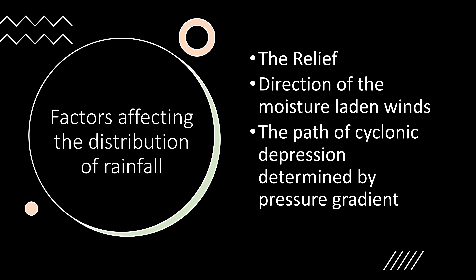There are three major factors which help in the distribution of rainfall. They are the relief, that is the topography of the land; the direction of the moisture laden winds, that is which way the moisture laden winds are coming from; and the path of cyclonic depression, determined by the pressure gradient. Pressure gradient refers to the movement of winds from higher pressure to a lower pressure region.